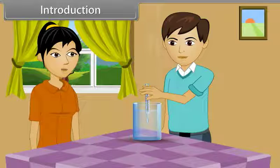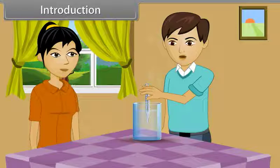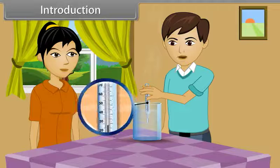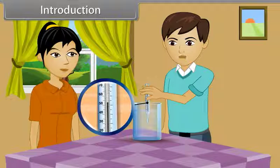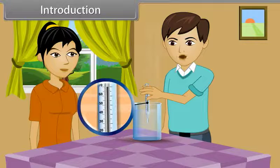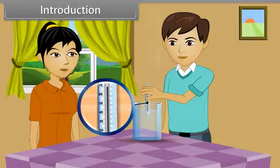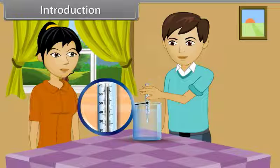Listen, a thermometer has mercury in it. When we put a thermometer into hot water, the heat from the water causes the expansion of the mercury. When mercury stops at a point, that point indicates the temperature of the water. It is quite interesting, and I want to know something more about it. Today we will learn more about the thermal properties of matter.